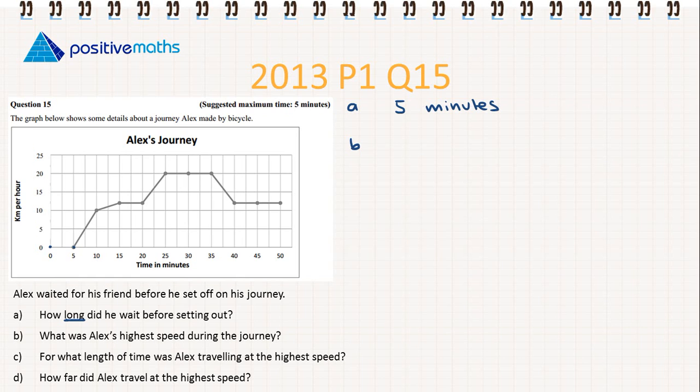Part B, what was Alex's highest speed during the journey? Again, we're going to get this information directly from the graph. So we're looking at the highest y-value. So we will see that the highest speed is 20 kilometers per hour.